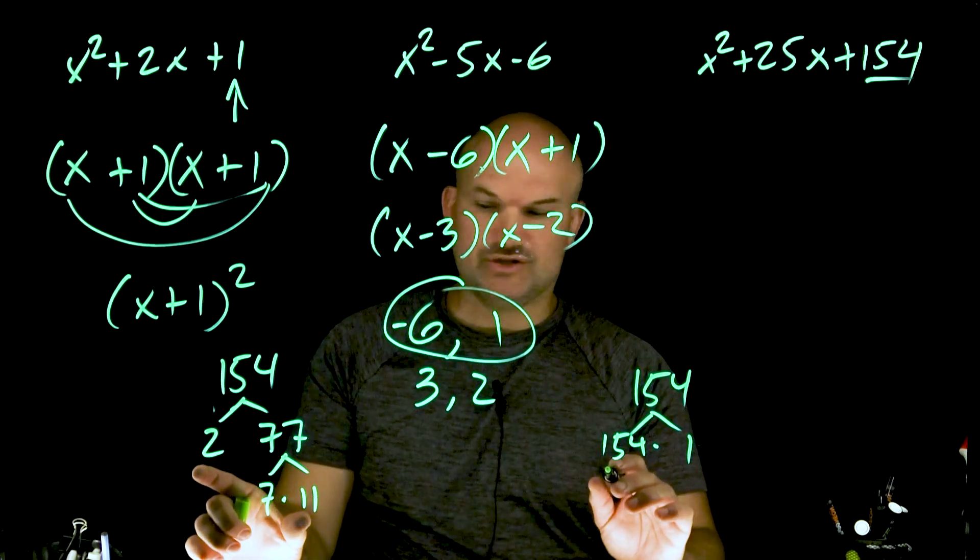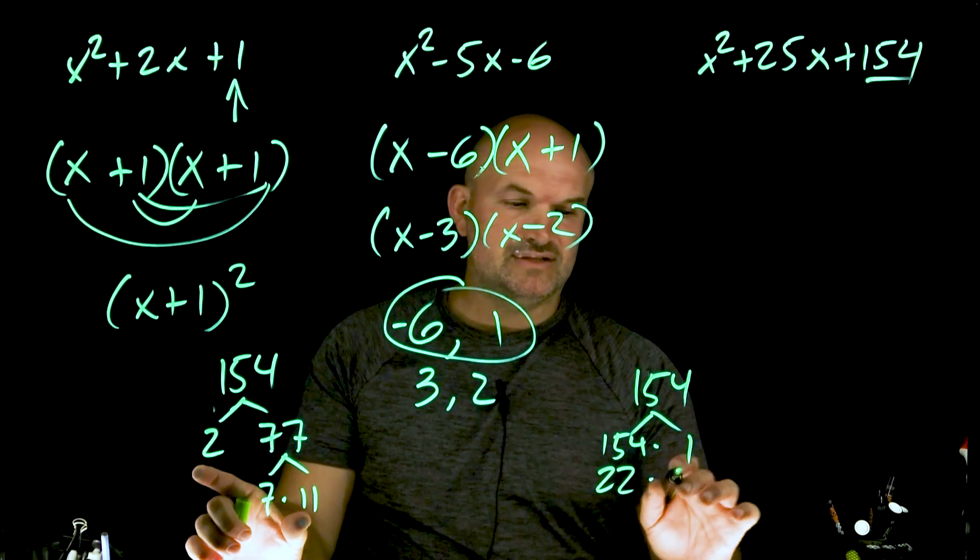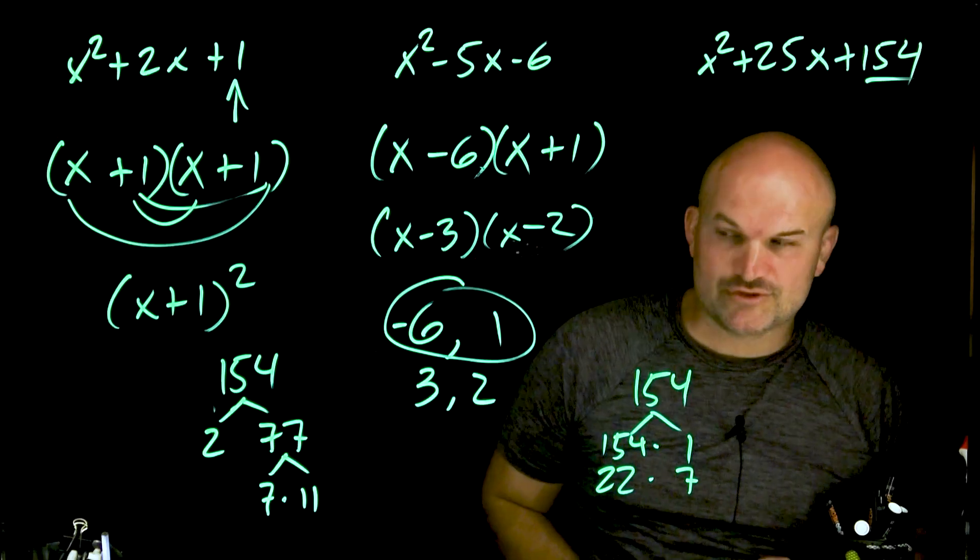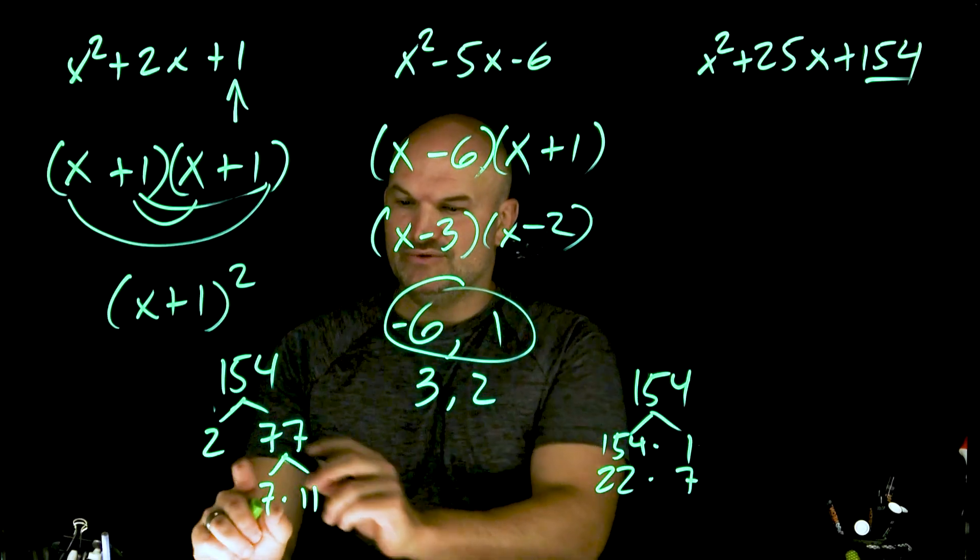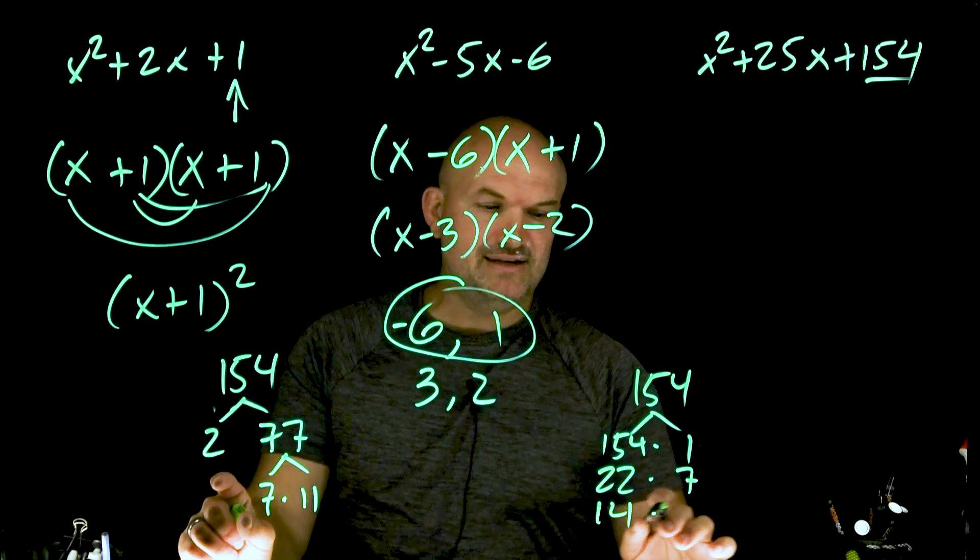I could do 2 times 11, which is 22 times 7. Does that give me 25? No, that gives me 29. But then I could do 2 times 7, so that'd be 14 times 11.